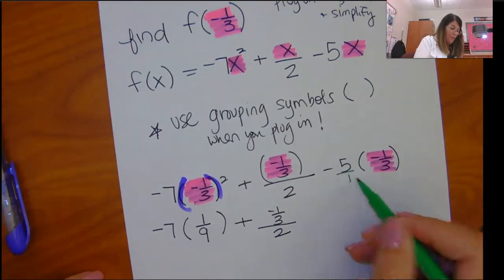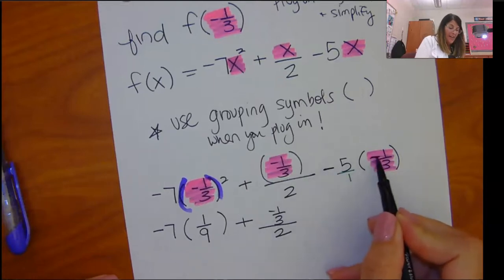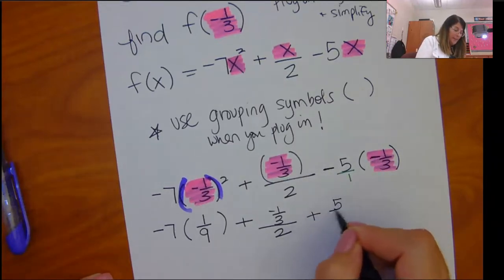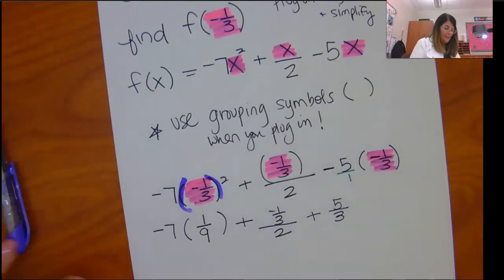This is 5 over 1. So I am going to multiply negative 5 and negative 1. That is going to make that plus positive 5 thirds.